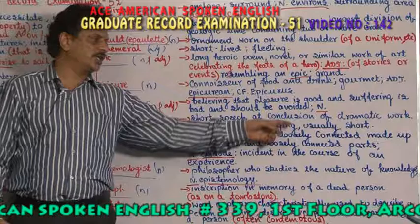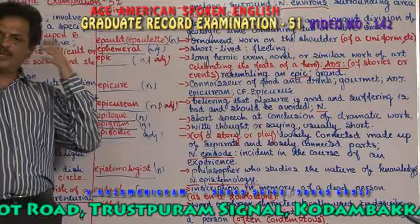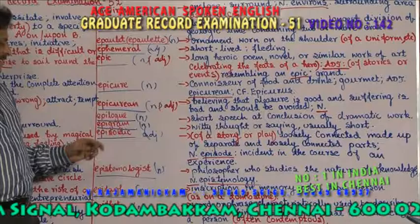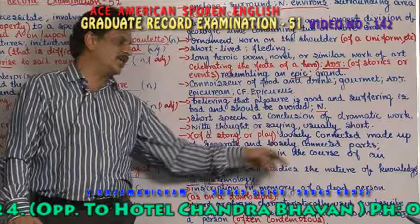Epilogue — a short speech at the conclusion of a dramatic work. After a dramatic work, a short speech given is called an epilogue. Epigram — a witty thought, a fun thought, thinking funnily or saying — usually short. A short witty saying is called an epigram.